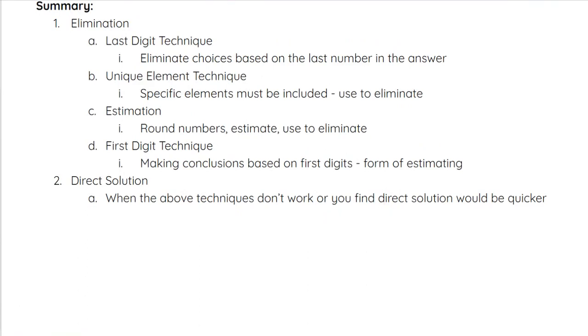So in summary, we worked with elimination, which had many different techniques underneath it. We talked about the last digit technique where we eliminate choices based on the last number in the answer. Unique element technique where specific elements must be included or specific numbers. For example, we had the fractions with 5 and 7 as the denominator, so we knew 35 had to be the denominator in our answer. We can use that to eliminate options. Estimating, where we can round numbers, estimate, and then use that to eliminate. And the first digit technique where we can make conclusions based on those first digits. This is a form of estimating as well. And then the direct solution is always there as an option if you aren't confident in the elimination techniques or if it's a simple problem that can be solved with direct solution maybe quicker than actually eliminating answer choices. Thank you.